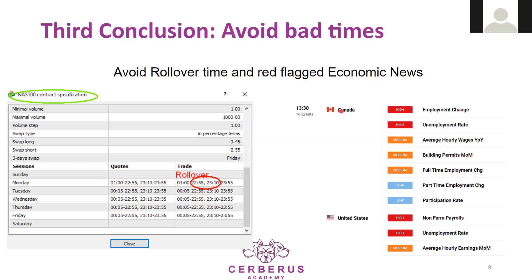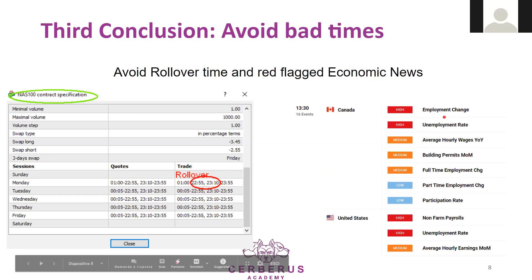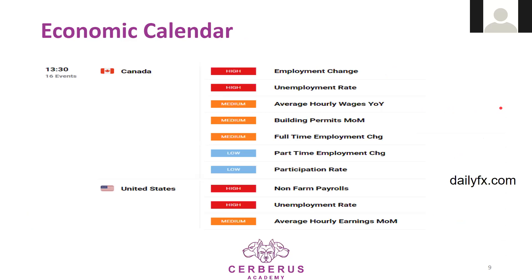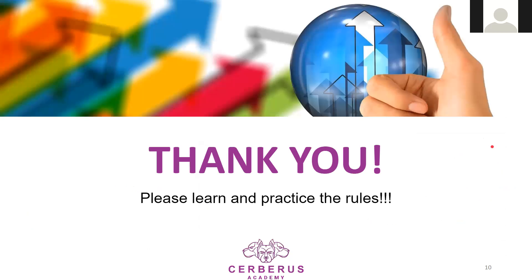Another period to avoid is the so-called red flag economic news. For example, at 1:30 PM, Canada and the United States may release very important economic data — so important it could change the economy. Opening a position at that time may have a very negative impact. You can find an economic calendar on many websites — just Google 'economic calendar.' Remember that volatility is always connected to spread and vice versa.